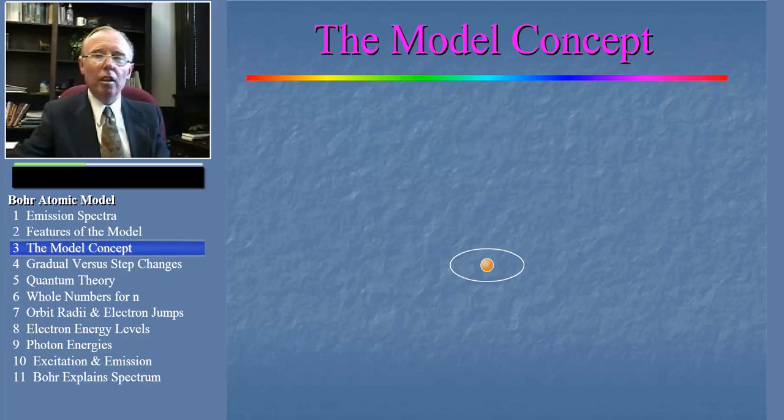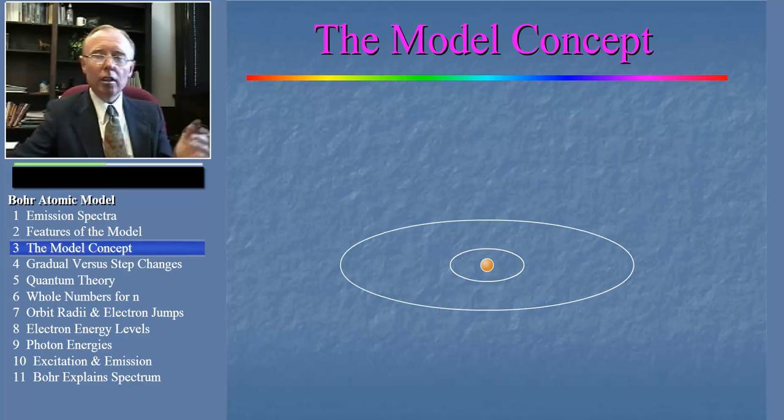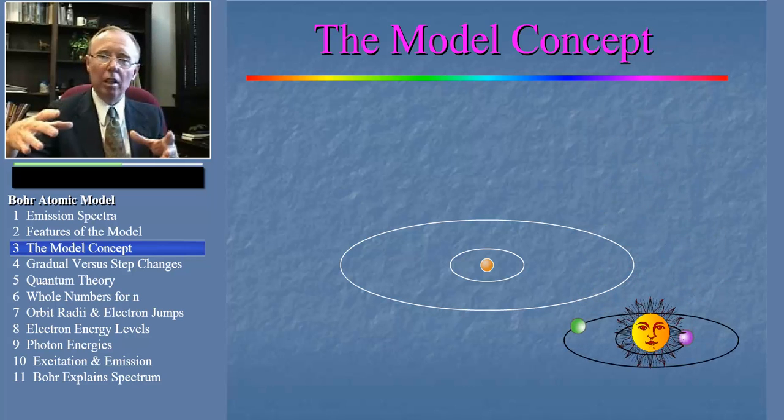Conceivably, the electron could be orbiting further out in another circular orbit of higher energy. As you look at this model, it might seem familiar. It looks like the solar system with orbits for the planets.